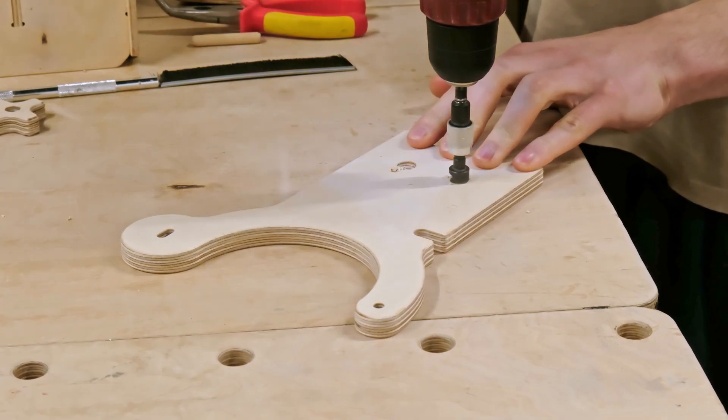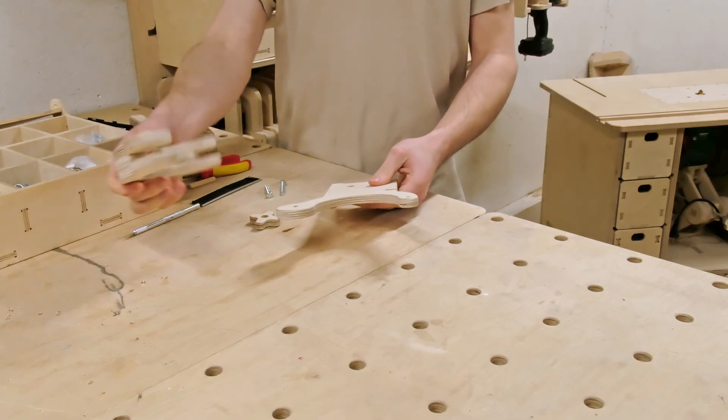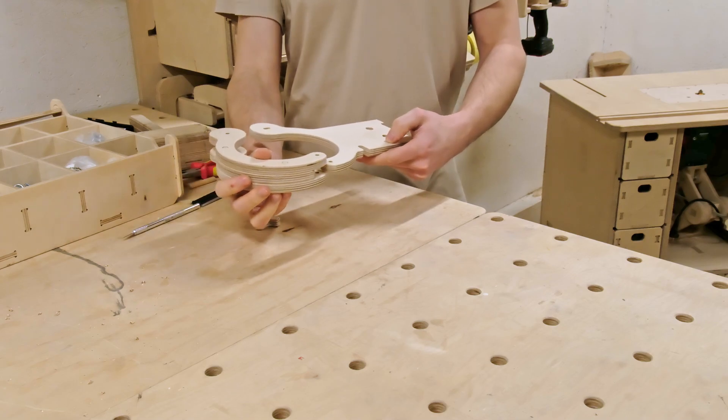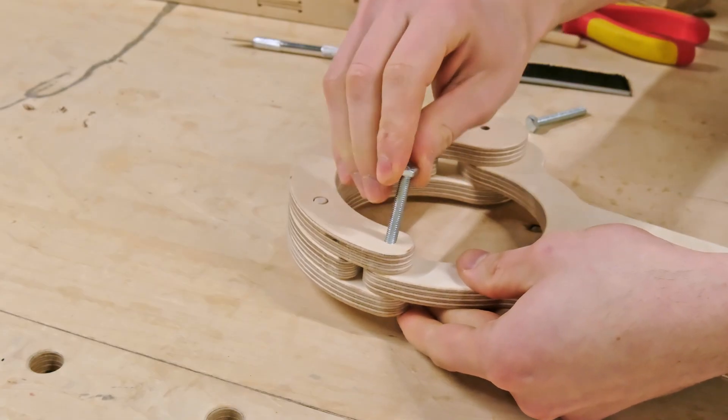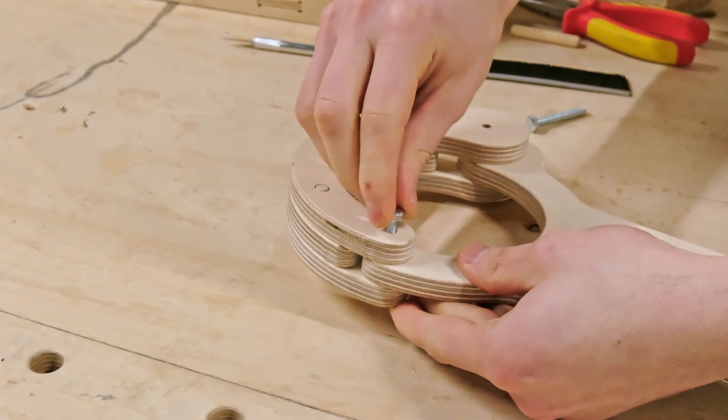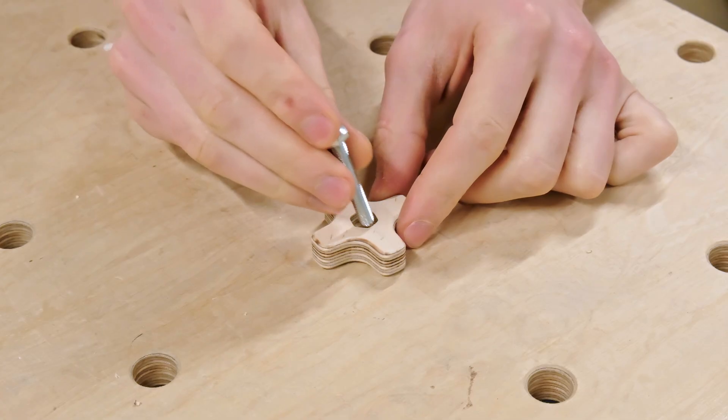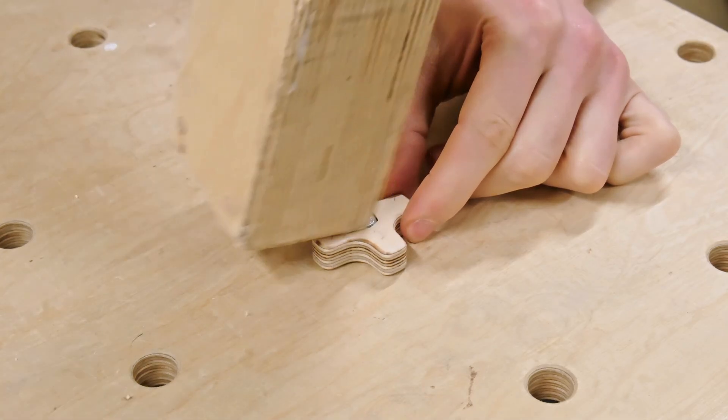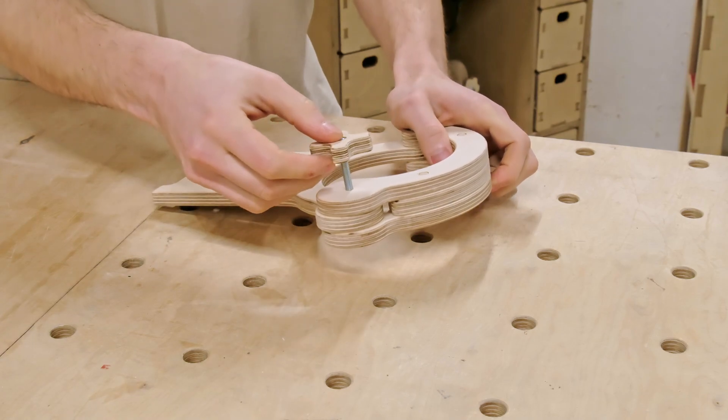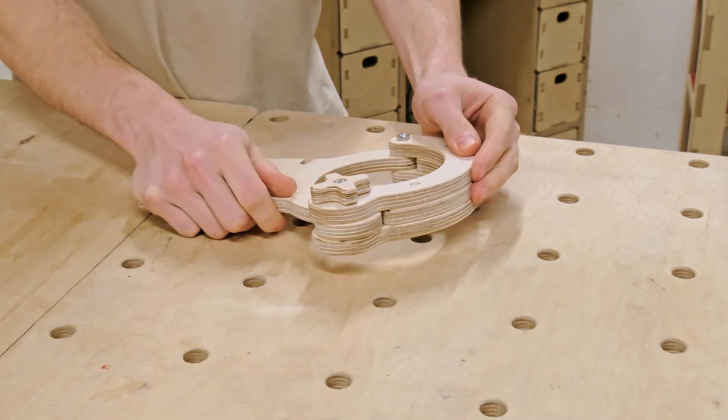Before adding the dust hose to the dust shoe, we have to quickly finish assembling the hose holder plate. So we can take the assembly we made earlier and attach it to the base panel. To secure the parts together, we are adding M6 screw to the hinge joint and then we can add another screw to the star knob.